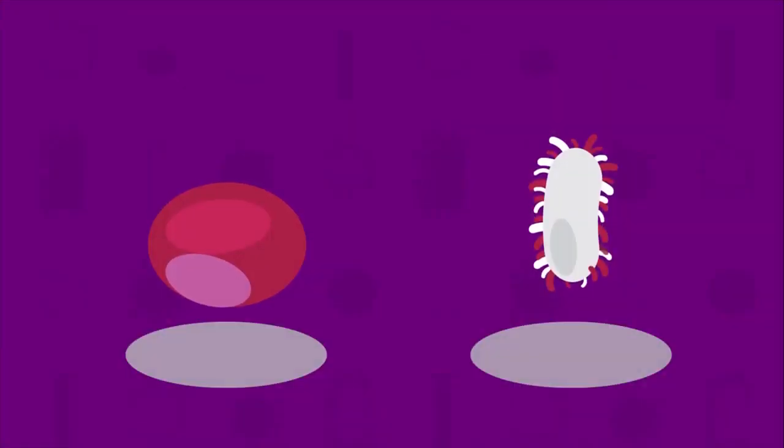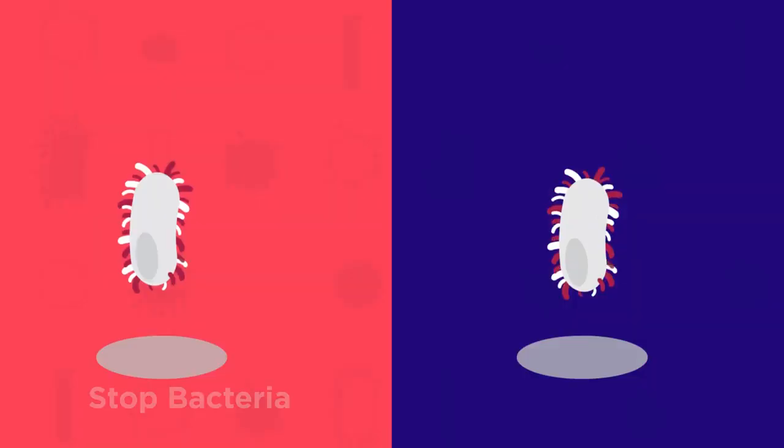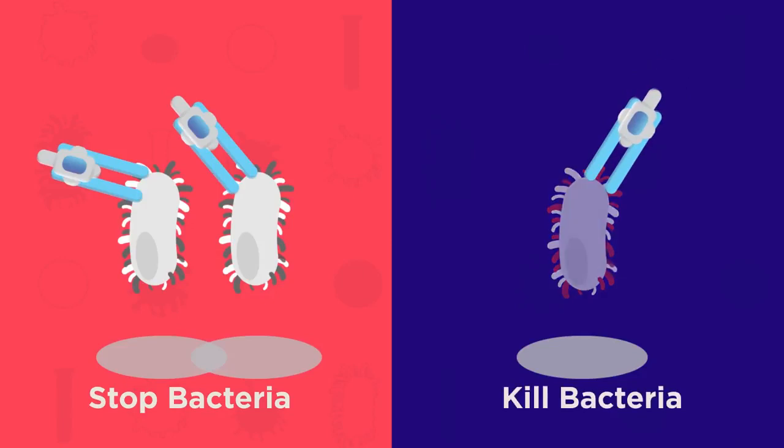Antibiotics affect specific parts of bacterial cells which human cells don't have. They stop the bacterial infection but do not harm the human cells. This is done in two ways, either by stopping the bacteria from reproducing or by killing the bacteria.